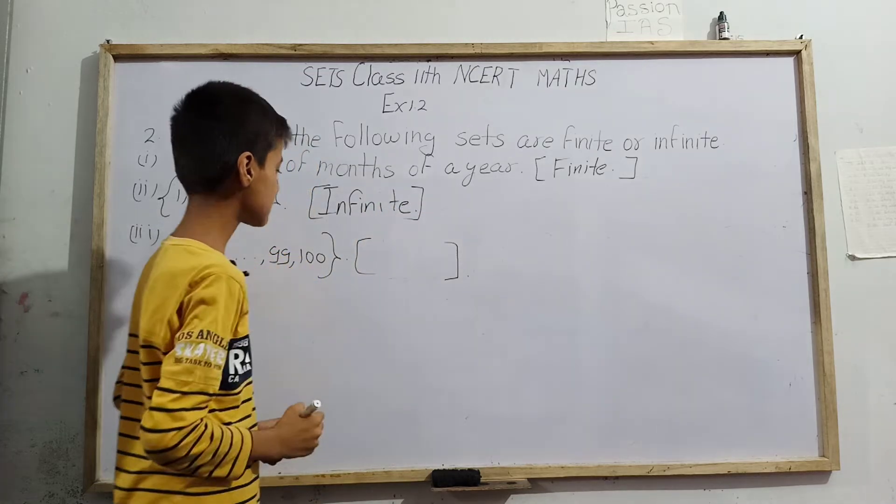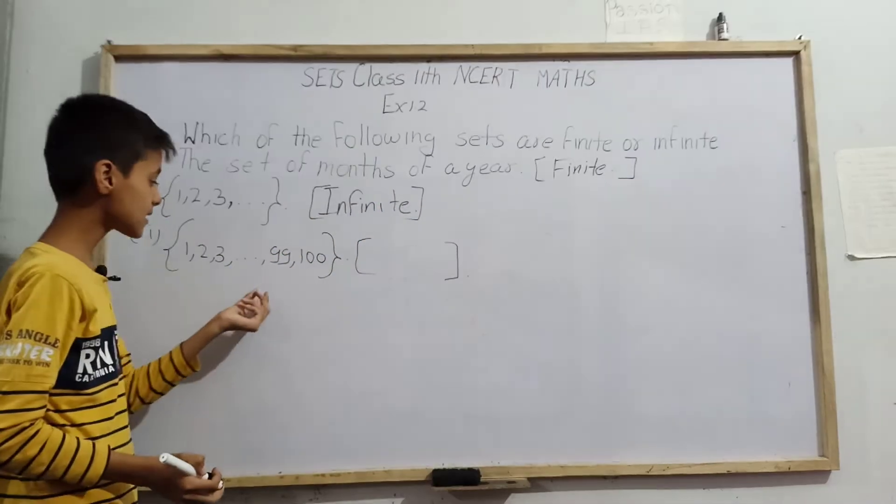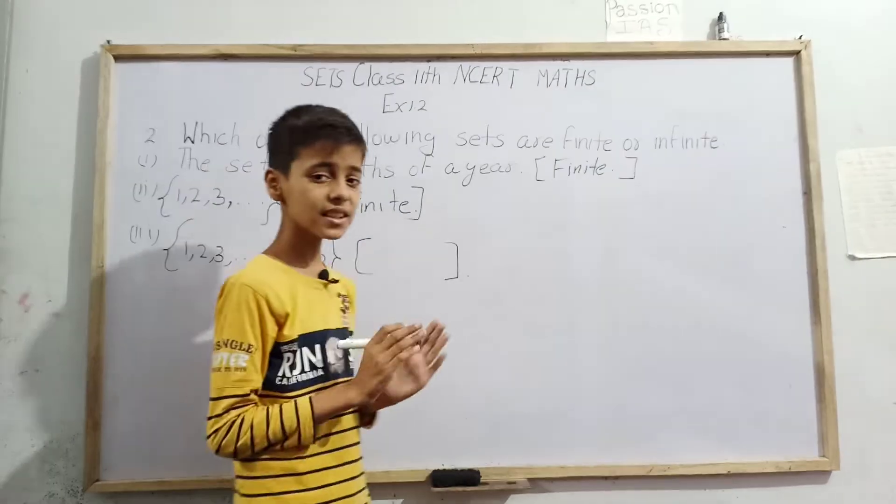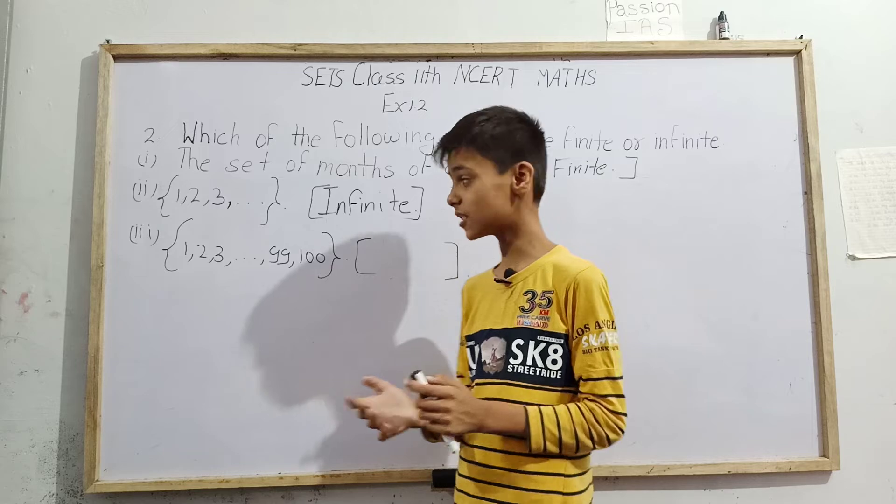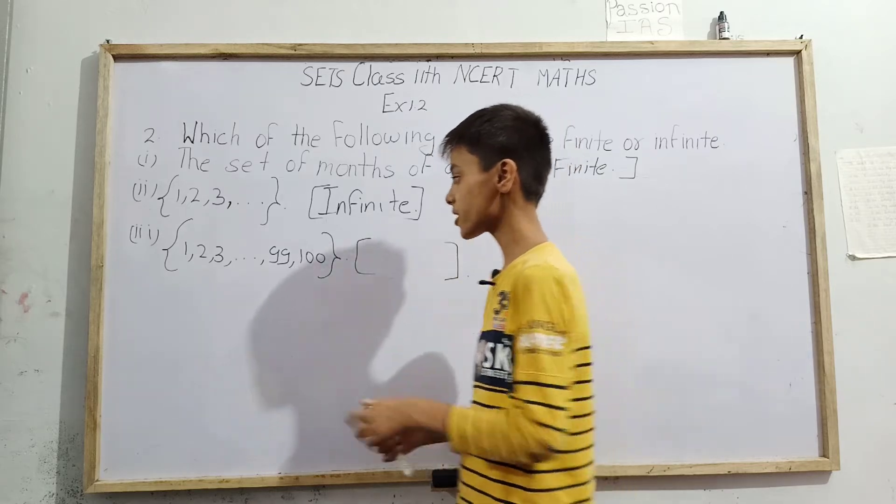Next we have {1, 2, 3, ..., 99, 100}. So here also dots are given to us, but let me tell you, this one is a little different. This is a finite set because here dots are in the middle.